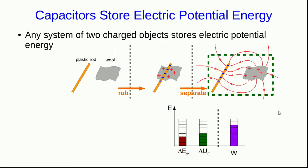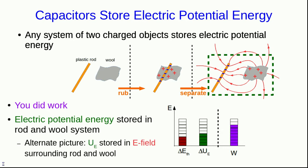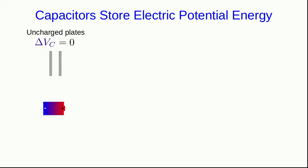We saw in the previous video lecture that any system of two charged objects can be used to store electric potential energy. Remember that if you think of a system of a plastic rod and wool that you rub and separate, then you do work on them, and as a result electric potential energy is stored in the rod and wool system, or alternatively, that electric potential energy is stored in the E-field surrounding the rod and the wool. In a circuit, rubbing things just isn't practical, so let's look at a more practical situation for storing potential energy using a capacitor.